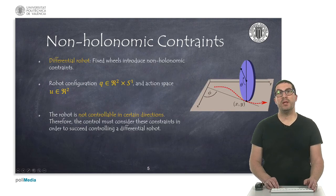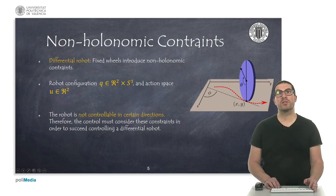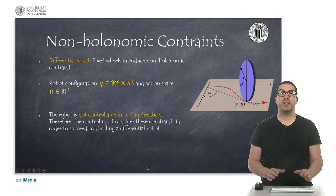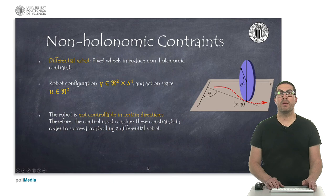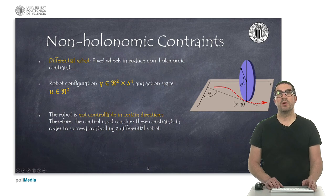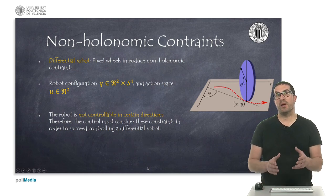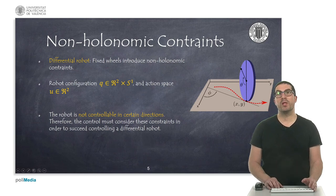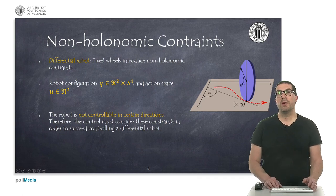A very important concept in mobile robots with wheels is the concept of non-holonomic constraint, which has been explained in a previous video about wheel types and types of robots. In this kind of robots — dealing with a differential configuration — fixed wheels introduce a non-holonomic constraint.